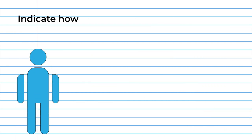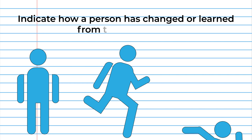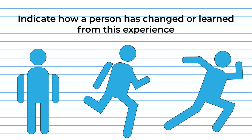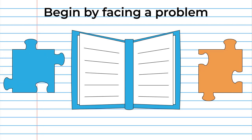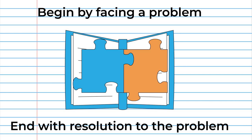A narrative paragraph should indicate how a person has changed or learned from this experience. The experience should unfold much like a plot of a novel or short story, beginning with the individual facing a problem and ending in the resolution of the problem and subsequent growth of the individual.